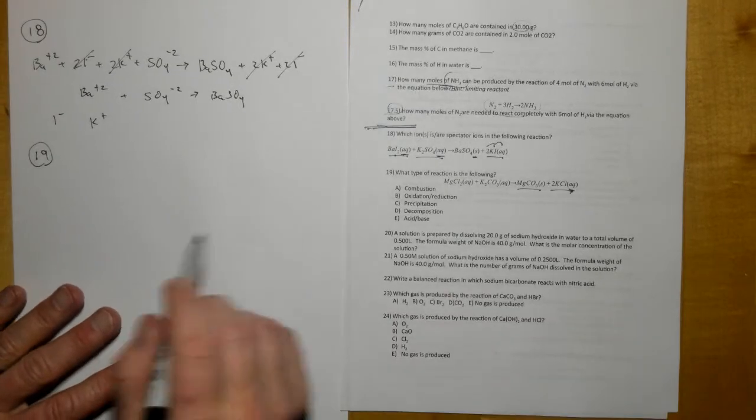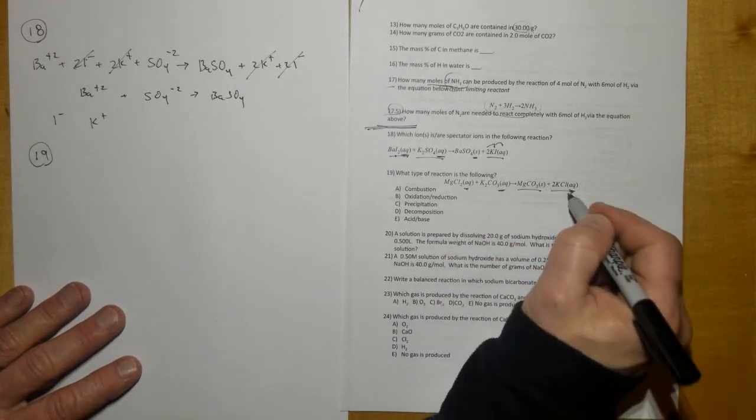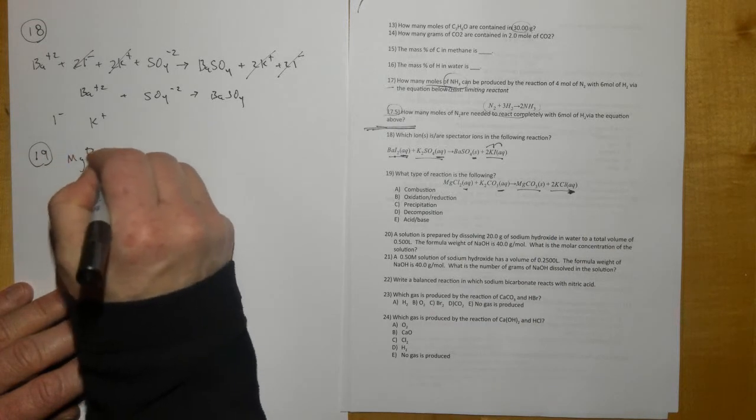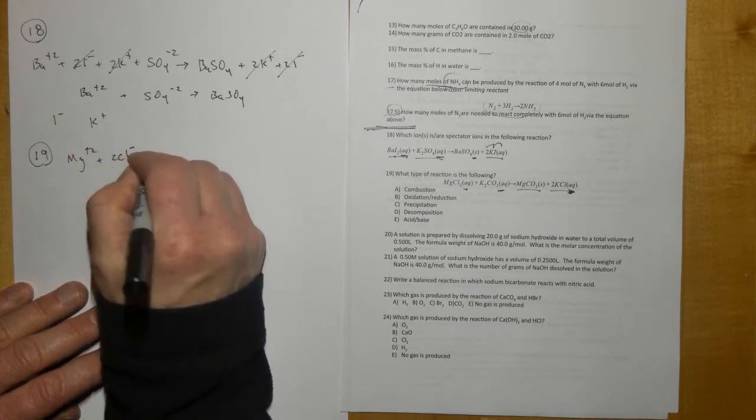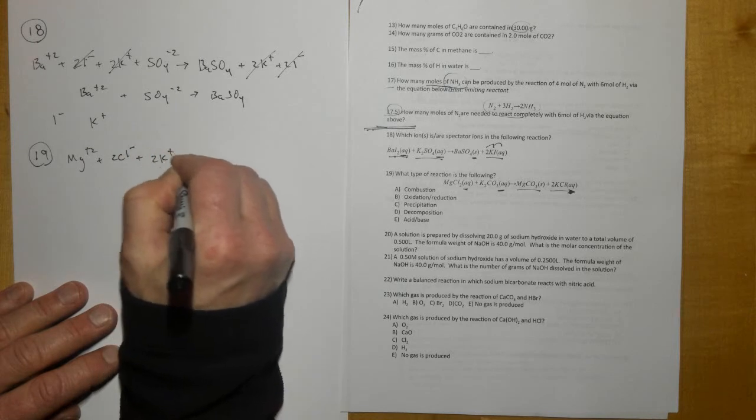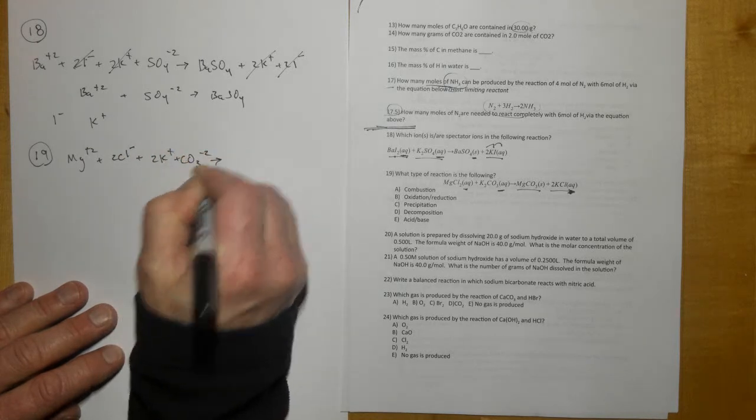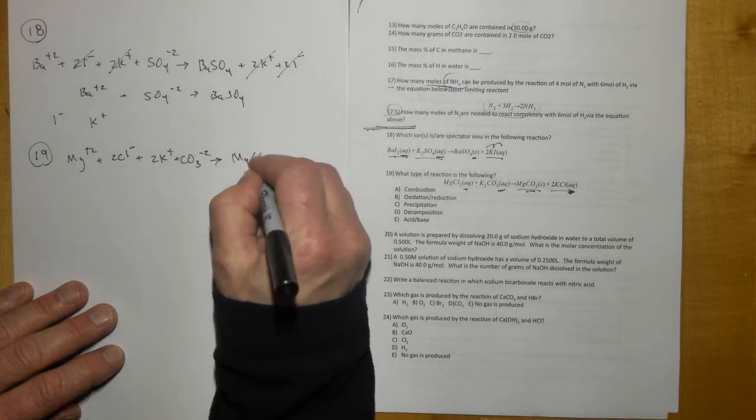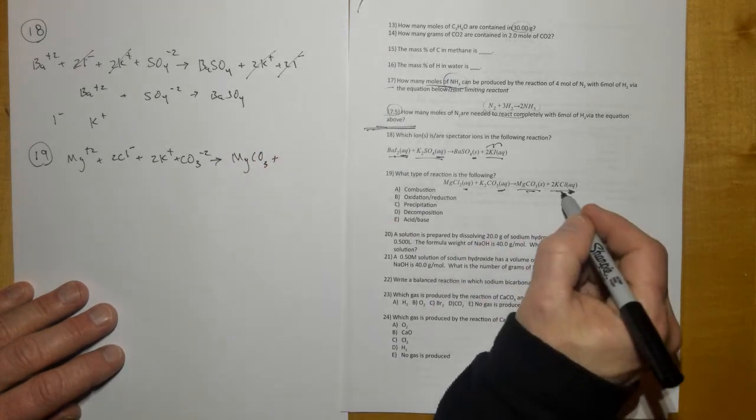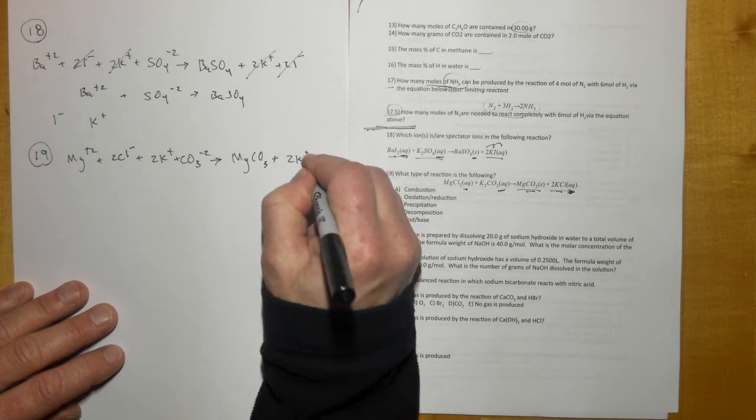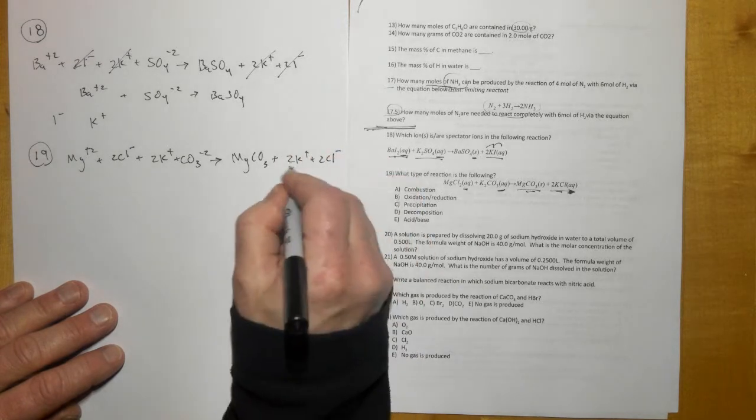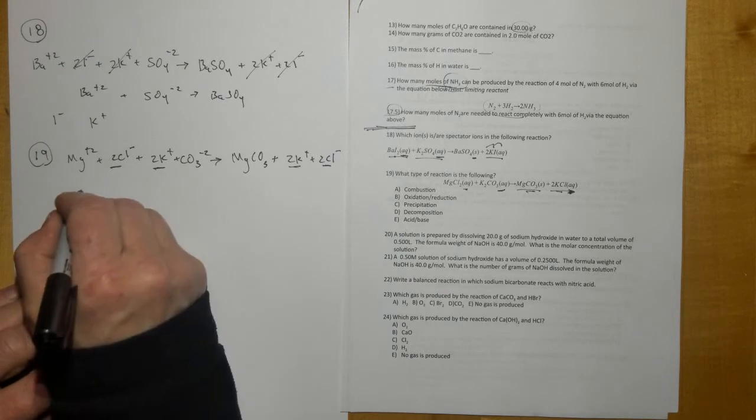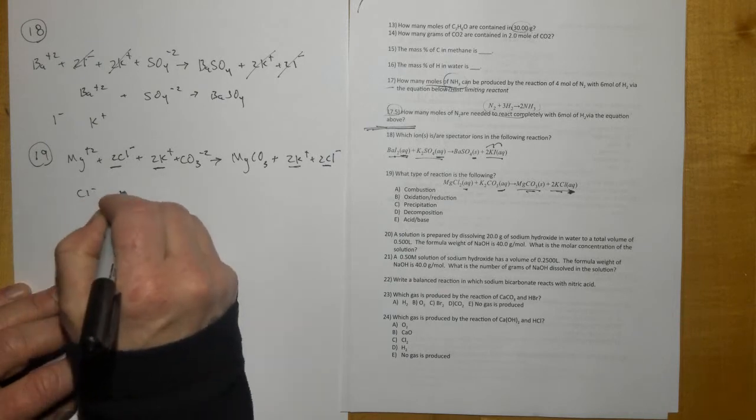19, same kind of question except we've got a different equation. Aqueous, aqueous, aqueous, split those. So Mg²⁺ plus 2Cl⁻ plus 2K⁺ plus CO₃²⁻. Split those, are all aqueous. Keep this together so MgCO₃ right here, and then split that. That's 2K⁺ and 2Cl⁻. So there's my spectators right there that are going to cancel with one another, so Cl⁻ and K⁺.